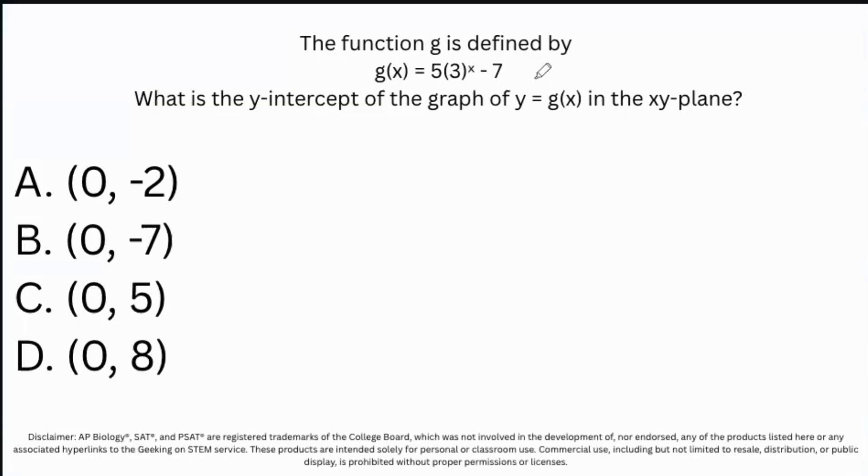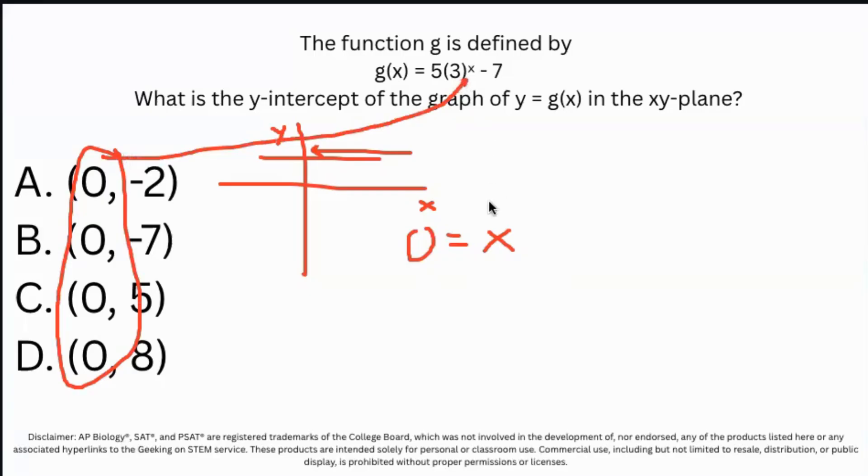Now, for this problem, they give you a function g(x) = 5(3)^x - 7 and they ask you what is the y-intercept? Just as a reminder, if you were asked about the y-intercept, the y-intercept is when it crosses the y-axis. This is the x-axis and this is the y-axis. At some point it crosses this y-axis, which means that x is going to be equivalent to zero. So it's a basic plug and chug problem where you're going to plug in zero for x.